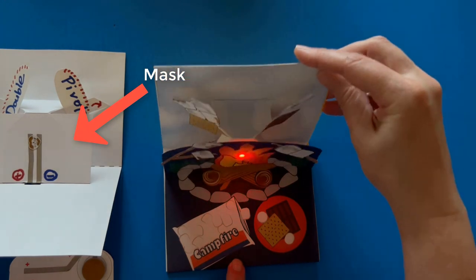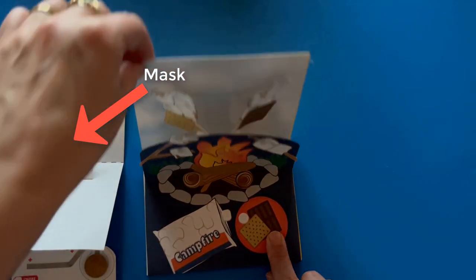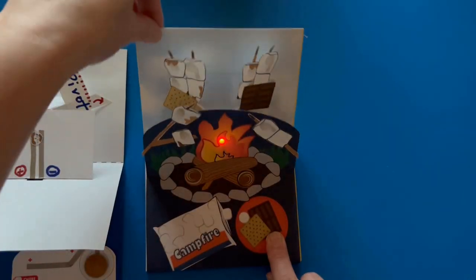While this circuit only contains one LED, the mask is a useful place for building more complex circuits with multiple lights, as I'll demonstrate later.